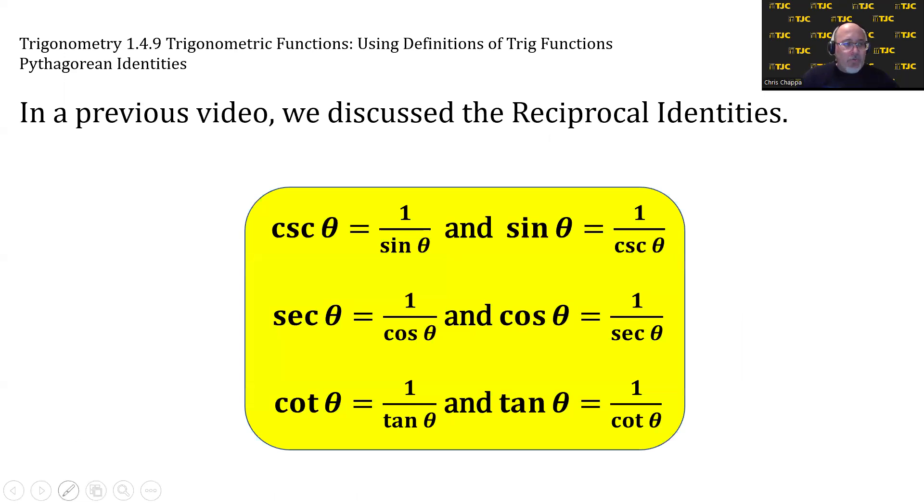In a previous video, we discussed the reciprocal identities. You see all three pairs here relating cosecant and sine, secant and cosine, cotangent and tangent.